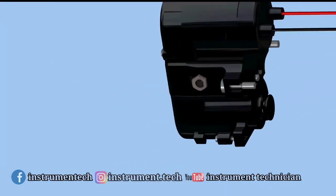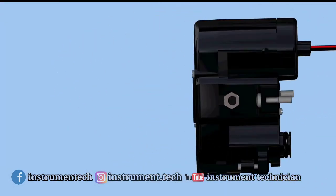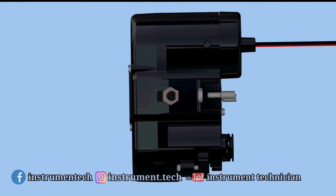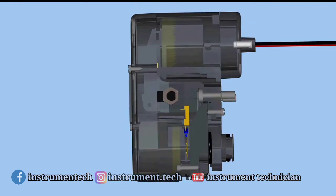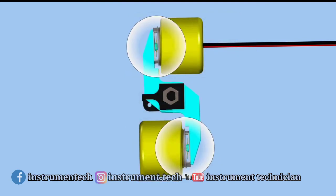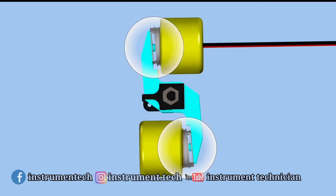The electronic 4 to 20 milliamp input signal is applied to an electromagnet. As current is changed to the electromagnet, magnetism increases or decreases.